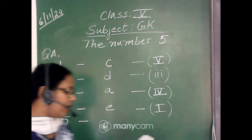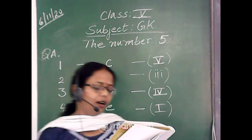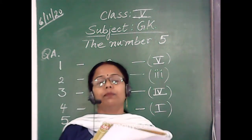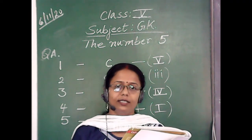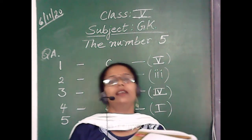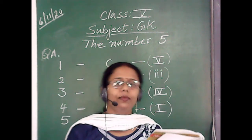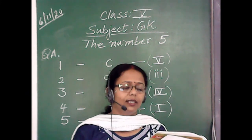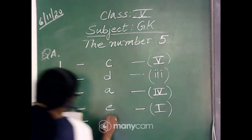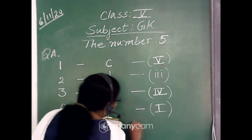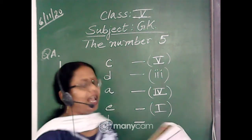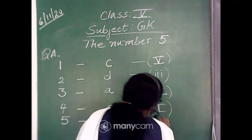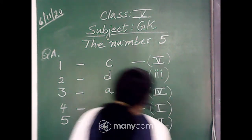And the last one, number 5: Europe, Asia, Africa, Australia and the Americas are represented by five rings on the Olympic flag. So number 5 is matched with B, and it is Roman numeral 2.